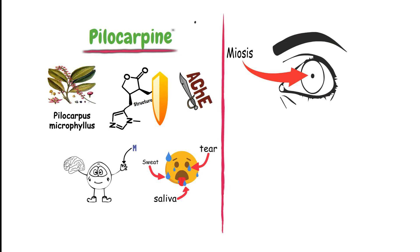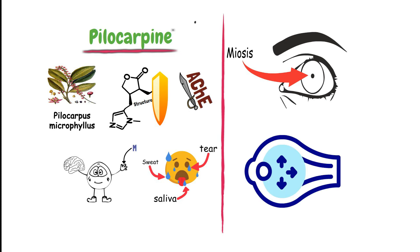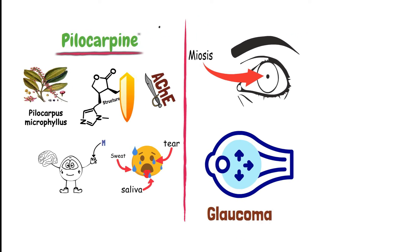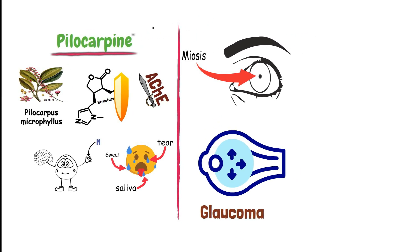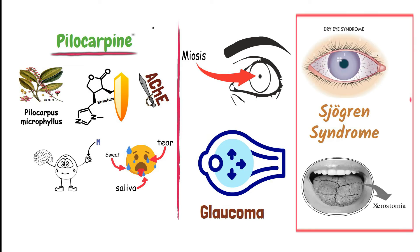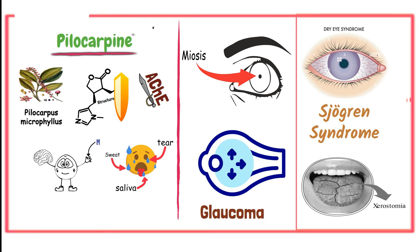Pilocarpine is also used for treating glaucoma and is the drug of choice for emergency lowering of intraocular pressure. Pilocarpine oral tablets are used for treating Sjogren's syndrome, characterized by dry mouth and lack of tears. In case of toxicity, atropine is used as an antidote.